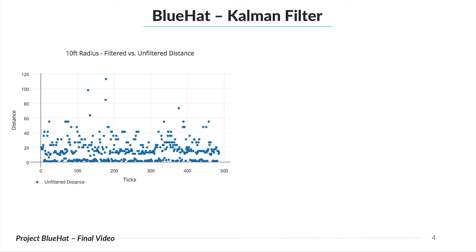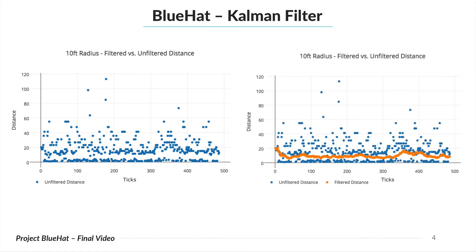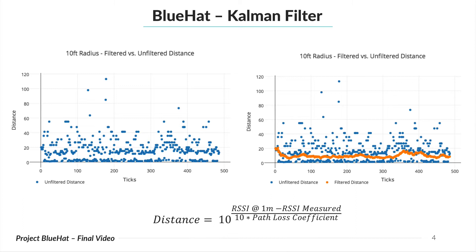The first step in going from received signal strength to distance is Kalman filtering. Here is an example of our calculated distance without first filtering RSSI. This data is extremely noisy and unusable for any sort of distance estimation. Through statistical magic this data is smoothed out using an algorithm that is O(1) in runtime, due to using only basic arithmetic operations, and O(1) in space because the only required value for this one-dimensional Kalman filter is the previous RSSI reading. After filtering the RSSI data we can use the equation seen near the bottom to calculate distance.